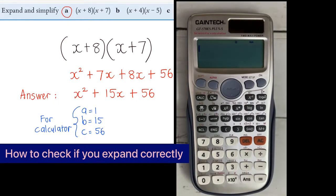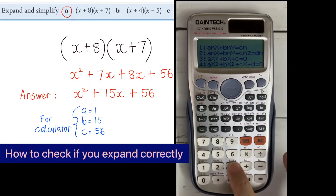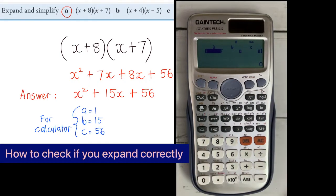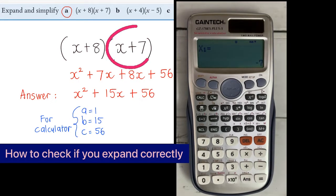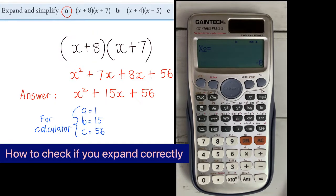If you're using this other model of calculator, click on mode one time and go for number 5 — Equation — then go for number 3. They will prompt you for the values of A, B, and C. Whatever is in front of x squared is A — our question gives 1. Press equal. So press equal again — x1 is minus 7, so your bracket should be x plus 7. Press equal. x2 is negative 8, so reverse the operation — your bracket is x plus 8.